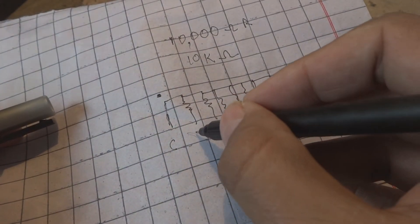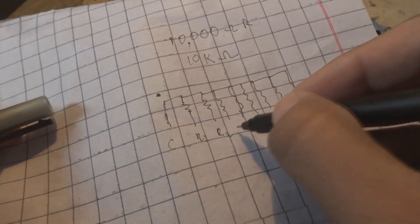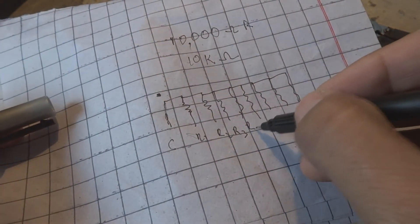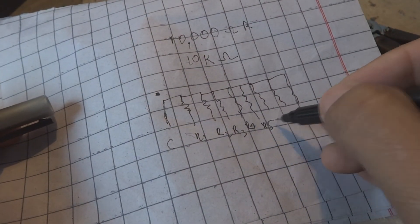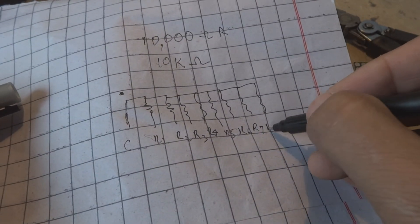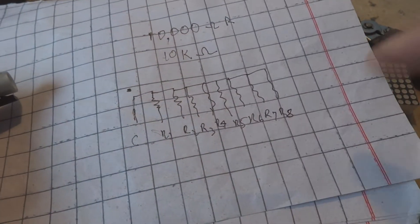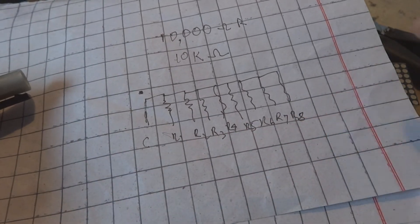So this is the arrangement: this is the common and this is R1, R2, R3, R4, R5, R6, R7, and R8. This is the arrangement inside.